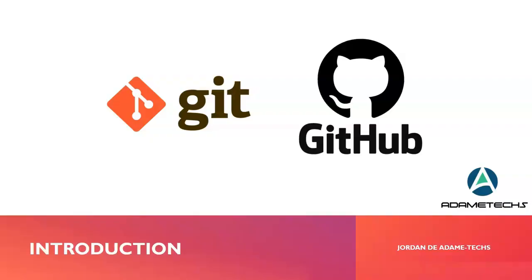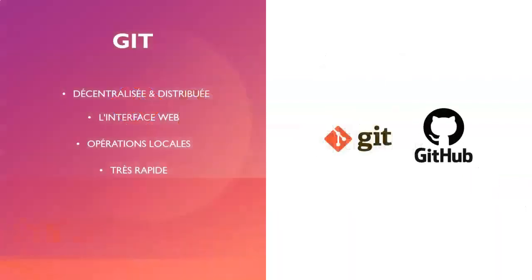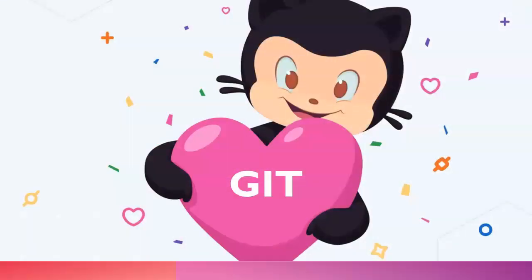Git is a decentralized or distributed version control system. Although Git is decentralized, most people still choose to use a central server as a primary repository for a team project. Another advantage of the distribution is that most operations of Git are local. Only a few commands require a network connection. Otherwise, you can work completely disconnected and even make comparisons and commits without being connected to a network. Since most operations are local, Git is very fast for these same operations.